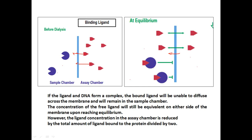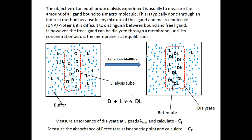The objective of an equilibrium dialysis experiment is to measure the amount of ligand bound to the macromolecule. This is done through an indirect method because in a mixture of ligand and macromolecule it is difficult to distinguish between bound and free ligand. A spectroscopic method is applied to determine the concentration of bound and unbound ligand. After 24 to 48 hours of agitation, equilibrium is reached where DNA is bound to ligand and some free ligand also remains.